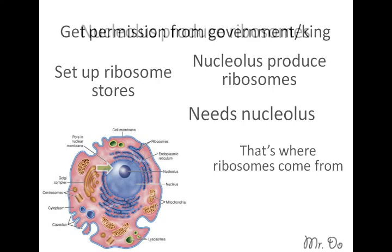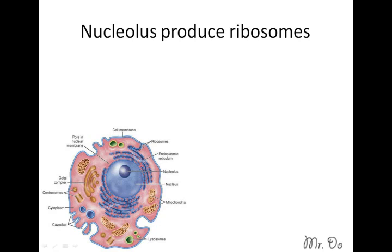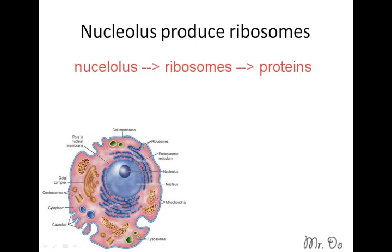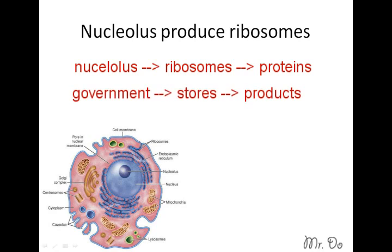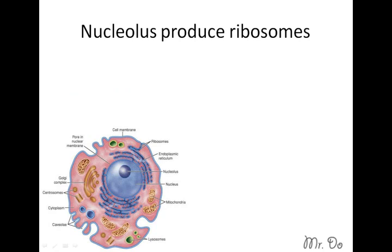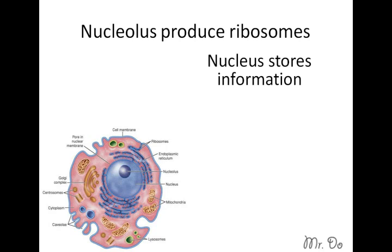To summarize: the nucleolus produces ribosomes — just as the king or government gives permission to create and lease a store. You need permission from the top, then you create your store, which is the ribosome. The ribosome then makes proteins for the cell, just as stores sell goods for the city. But to do that, ribosomes must be created by the nucleolus. The nucleus stores information called chromatin, and that's it about the nucleus for now.